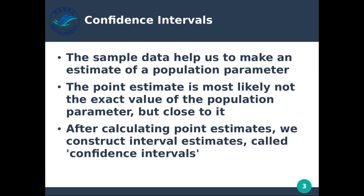The point estimate is most likely not the exact value of the population parameter, but close to it. Whenever we calculate the mean of our sample, it's not going to be the exact mean of the entire population. If our sample is large enough, it should reflect quite accurately the mean of the overall population. If our sample size is small, it will possibly be further away from the true mean.